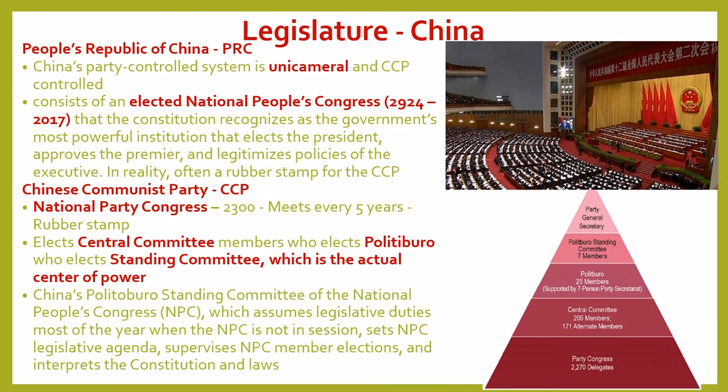Let's go to China. Of the six countries, only two have unicameral legislatures: China and Iran. China has a very unique system — the People's Republic of China is party-controlled by the Communist Party. The name of their unicameral legislature is the National People's Congress. It is elected, but elected from lower Congresses, not directly by the people. Legislative bodies at lower levels nominate and elect people to the National People's Congress at the national level, starting local and moving up.